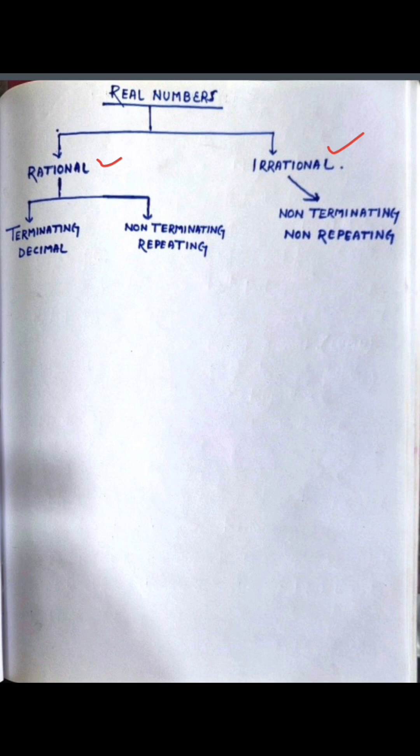Any number that can be represented in the form of p by q, where q is not equal to 0, this is rational number. Which doesn't represent in form of p by q, that is irrational number.